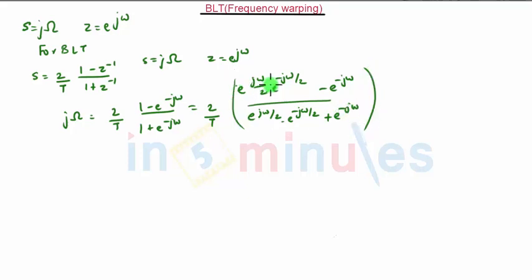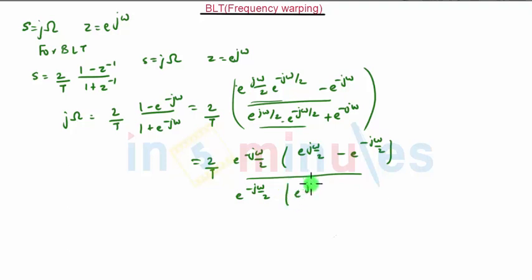We have done this modification because the product comes out to be 1. Now taking e^(-jω/2) common, we get (2/T) times [e^(jω/2) - e^(-jω/2)] / [e^(jω/2) + e^(-jω/2)].